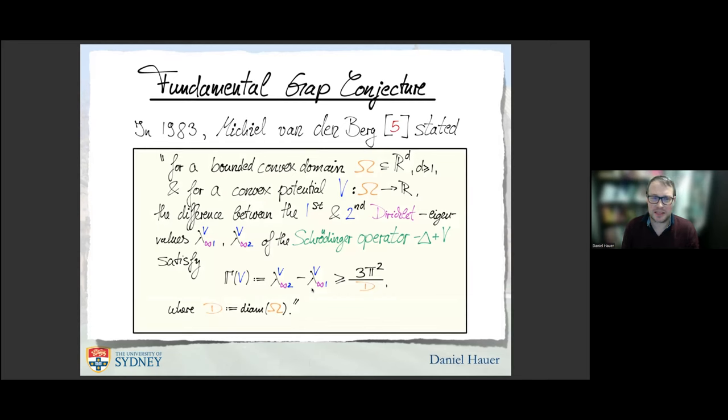In his study on the Bose-Einstein condensation, Professor Mark Alikhan Bandenberg stated in his paper from 1983 the following conjecture: omega is a convex domain in R^d and V is a convex potential. He conjectured that the difference between the first and second Dirichlet eigenvalue of the Schrödinger operator satisfies this estimate.